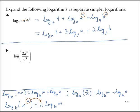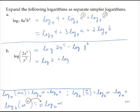Exercise B: I have the log of 2x to the fifth divided by y to the third. First, let's get rid of that division by using a subtraction. So that's the log of 2x to the fifth subtract the log of y to the third. But we still have a product here — 2x to the fifth is a product. So that's the log of 2 plus the log of x to the fifth minus the log of y to the third.